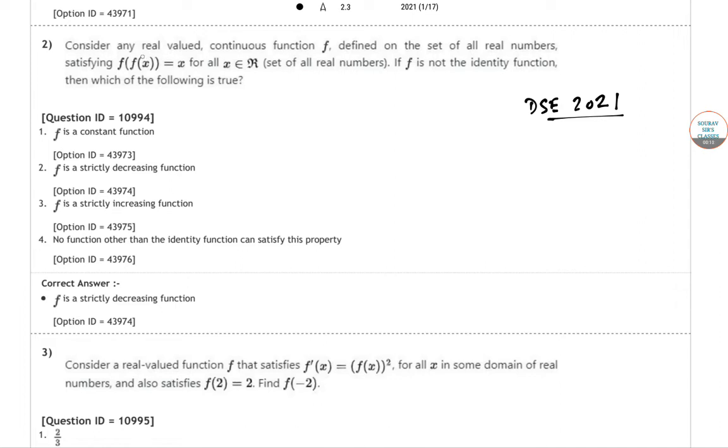They have given a real-valued continuous function defined on the set of all real numbers, satisfying f(f(x)) = x. If f is not the identity function, then which of the following is true?